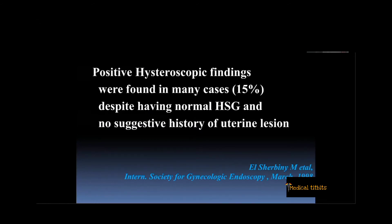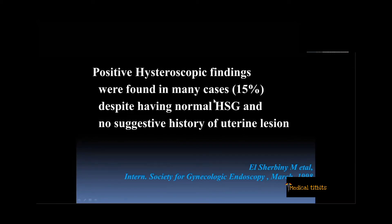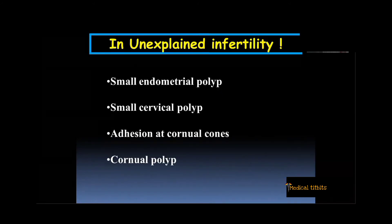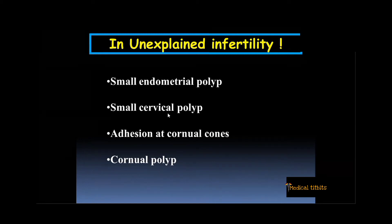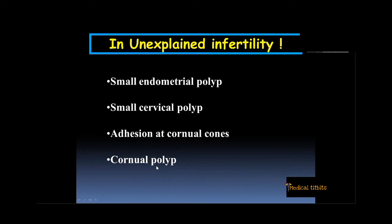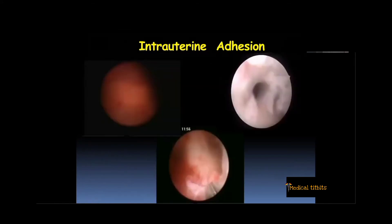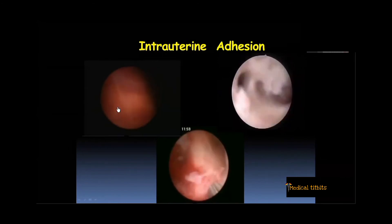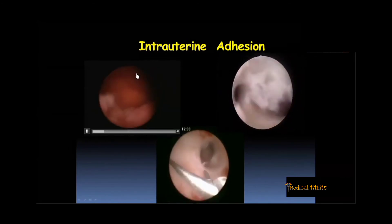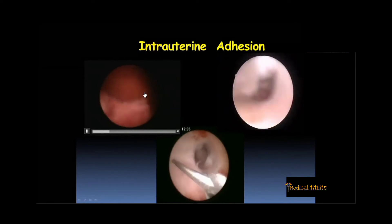If you look into the literature, way back in 1998, there is a study from the International Society for Gynecological Endoscopy, and abnormal hysteroscopy findings were found in as many as 15% of cases, despite having a normal HSG and no history of uterine issues. Most of the cases diagnosed as unexplained infertility had small endometrial polyps, small cervical polyps, or adhesions in the cornual area, which are usually missed. Unless we rule those out, we cannot even label a case as unexplained infertility. The first picture shows a flimsy adhesion inside the uterine cavity — small and flimsy, which we will never see on scan.